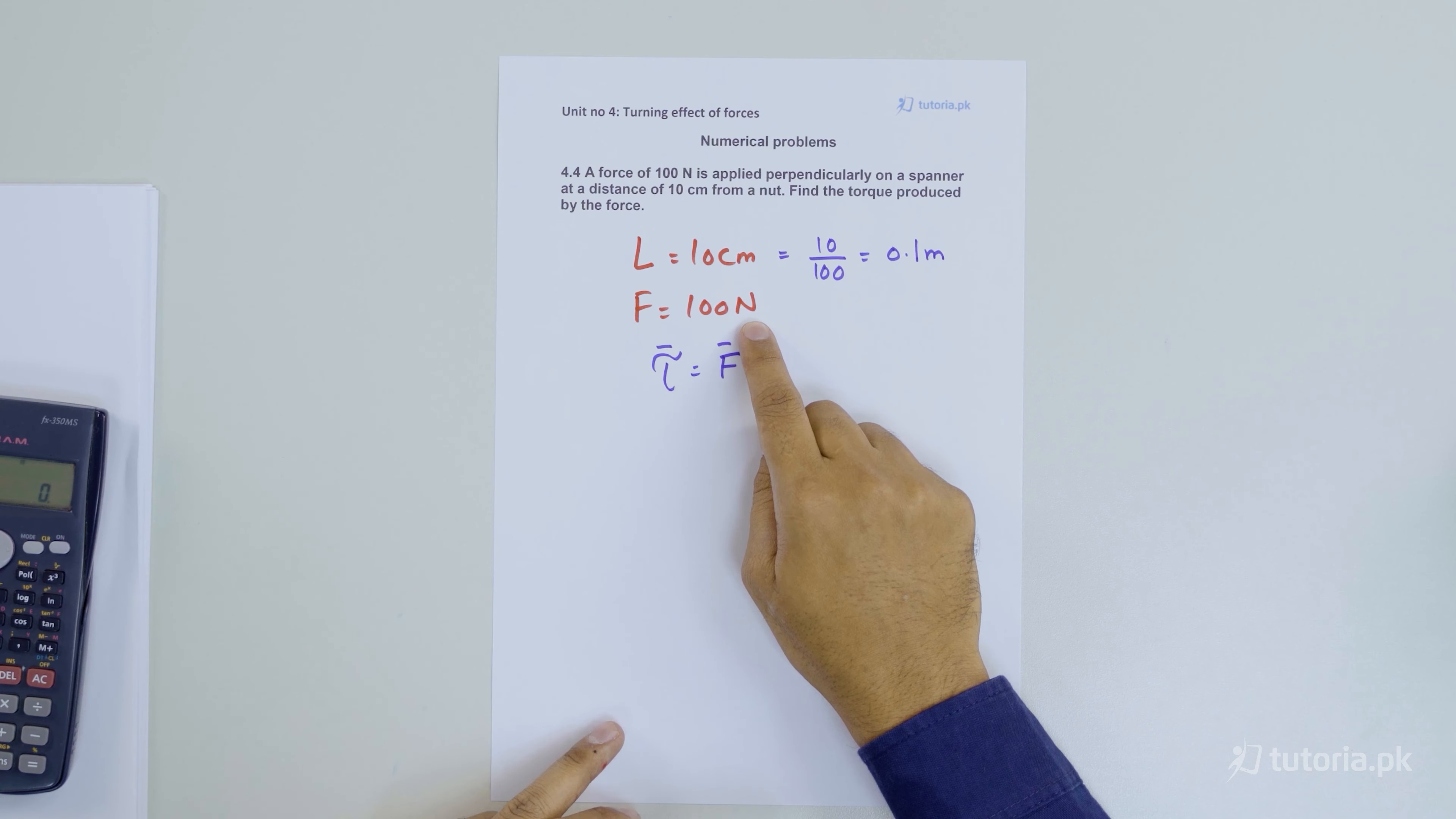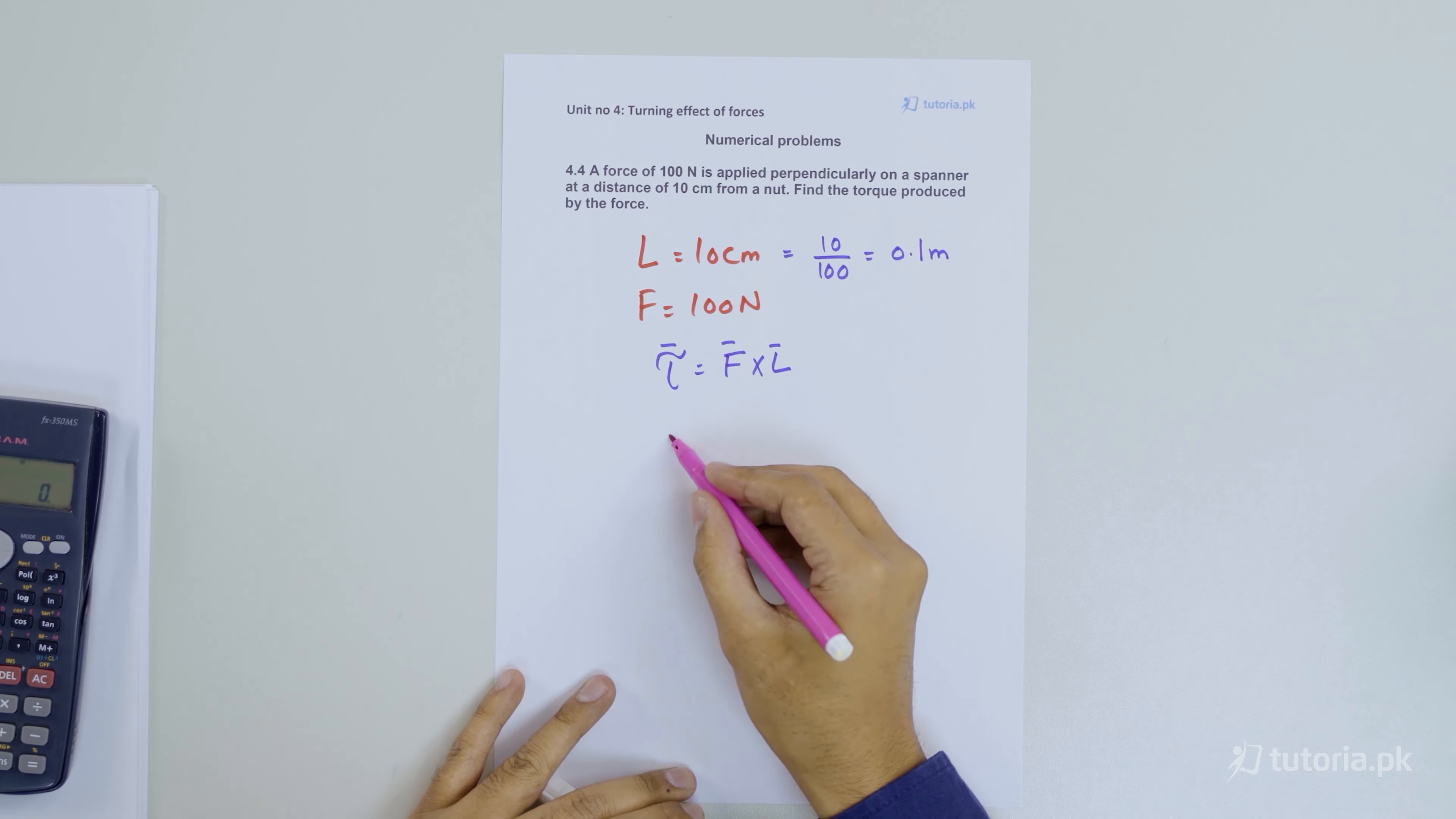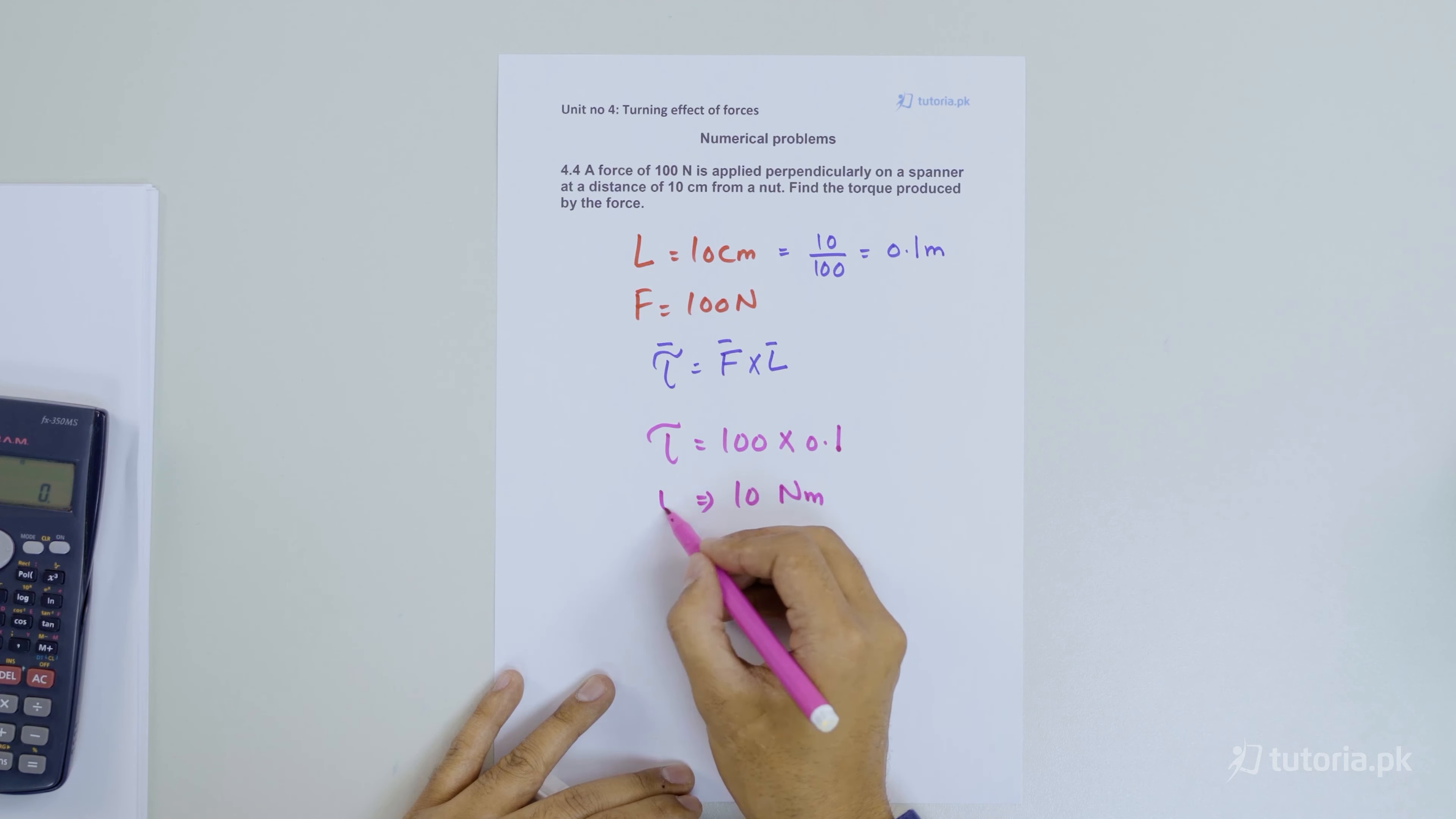The force has already been converted. Now we will put values in the torque formula and we have the answer. Torque is equal to 100 multiplied by 0.1, which is equal to 10 Newton meters.